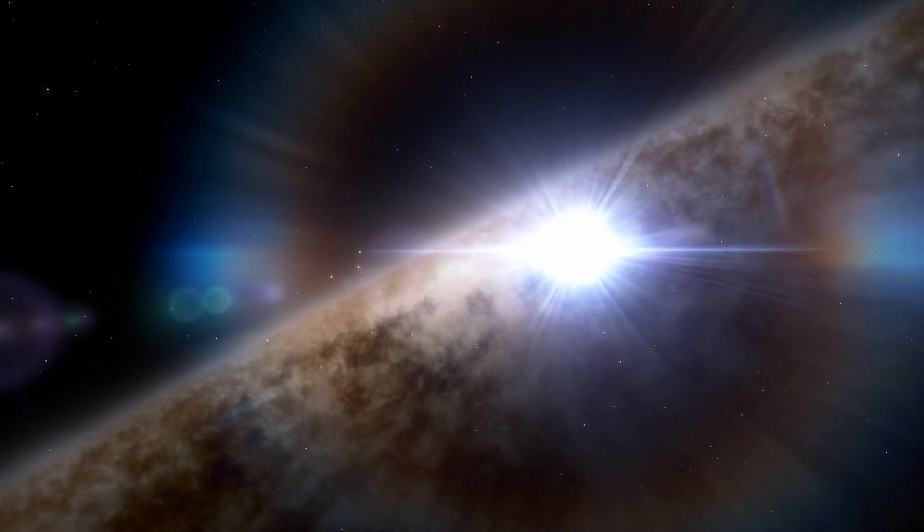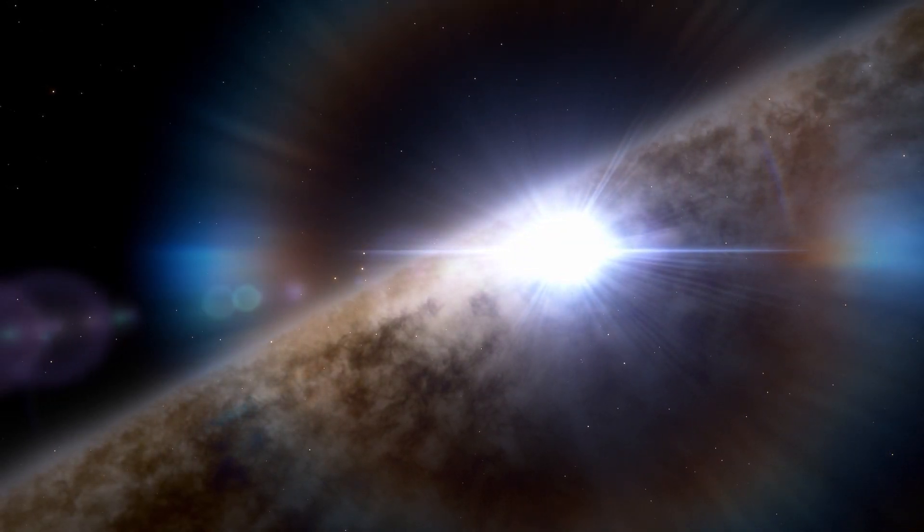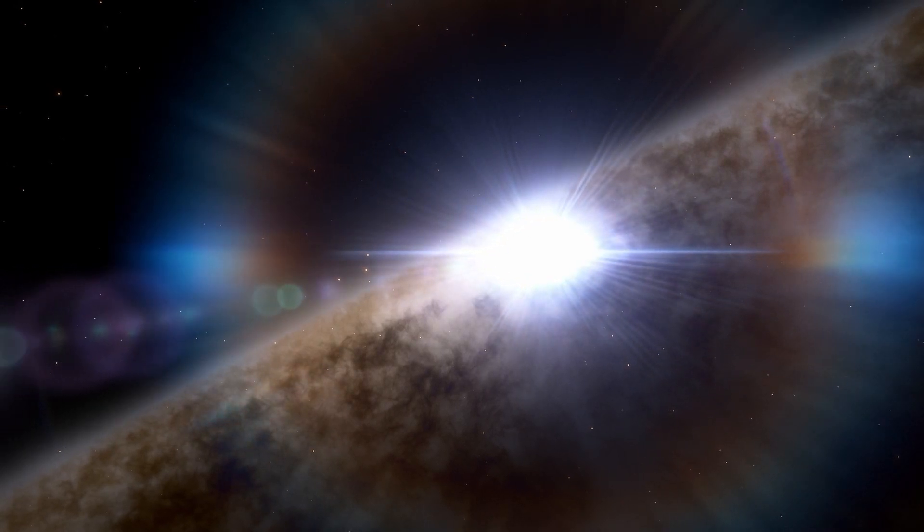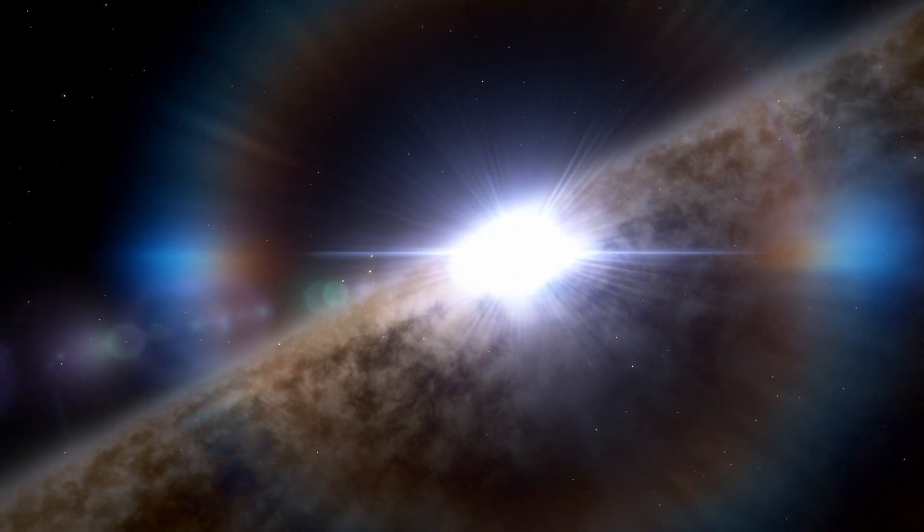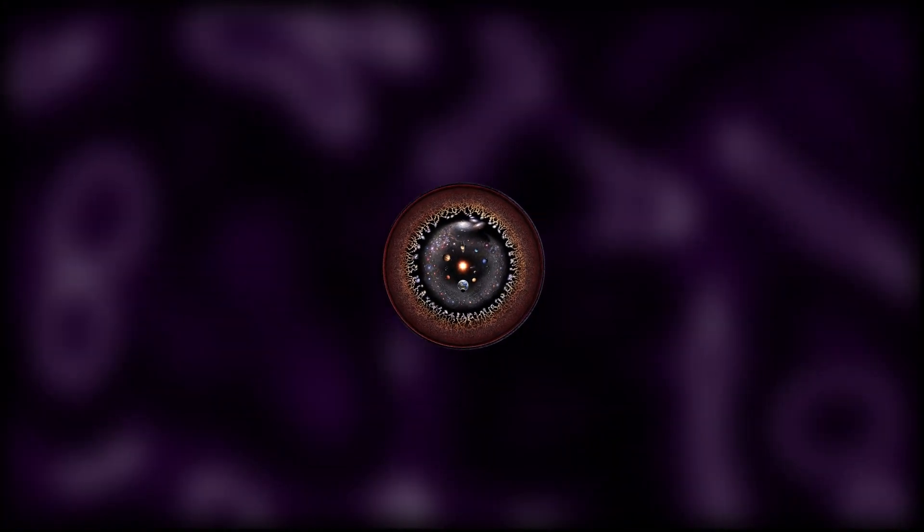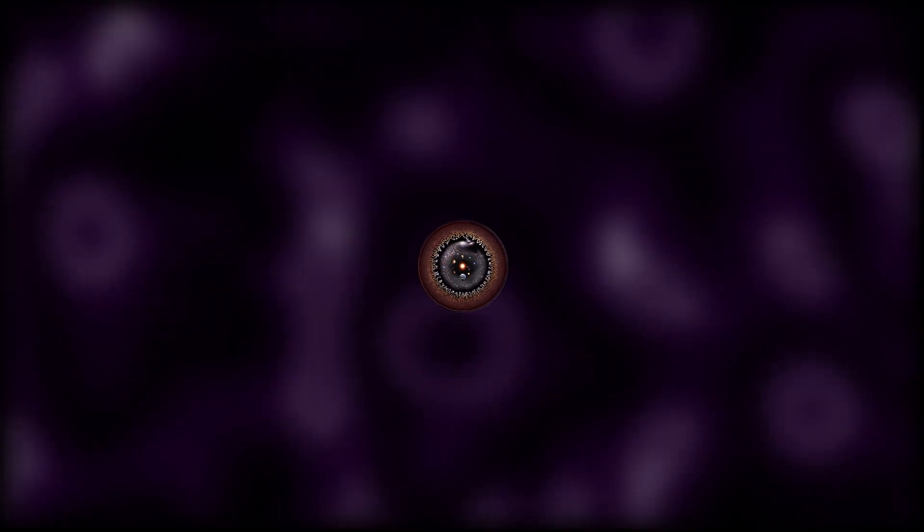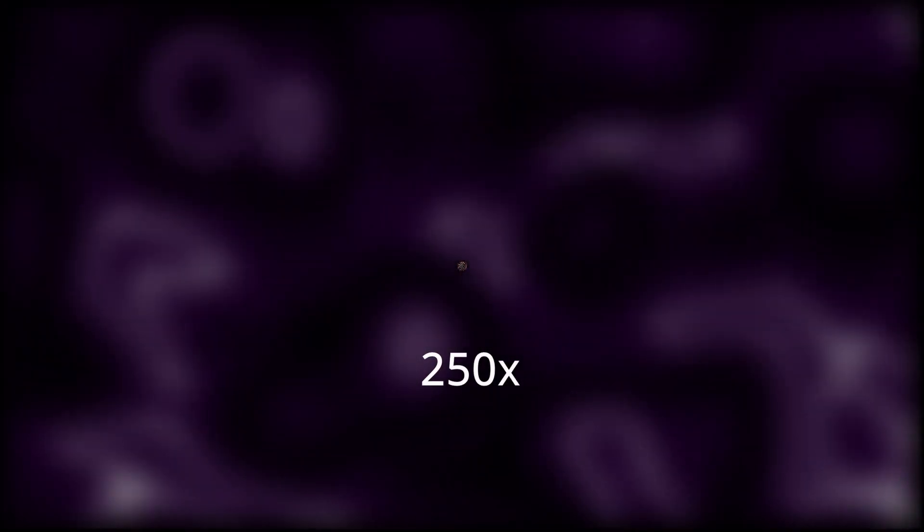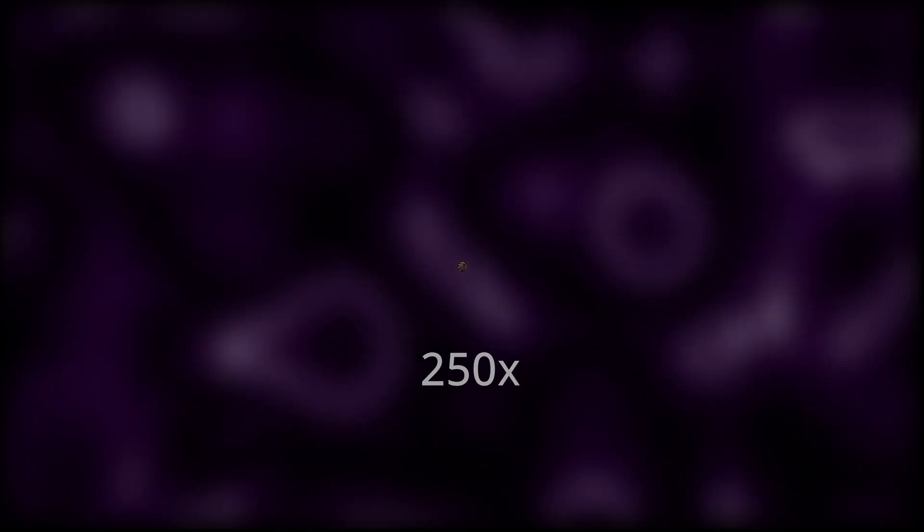Just like how we can put limits to the age of the universe based off the age of Methuselah, we can also do something similar with the curvature of space and the size of the universe. Based on the flatness we measure, we can confidently say that the smallest the universe could possibly be is a minimum 250 times larger than the current observable universe. This of course is not its actual size, just the minimum size.